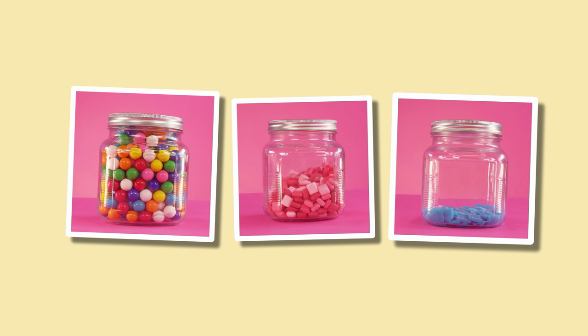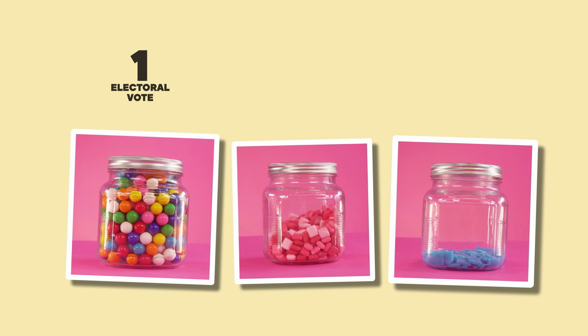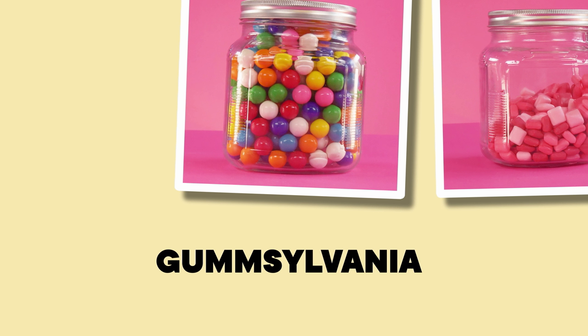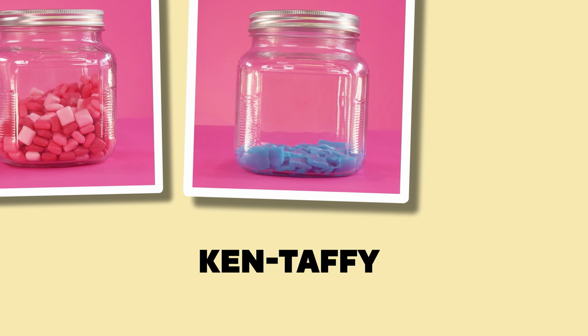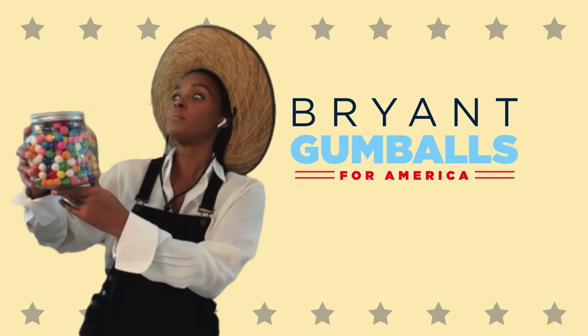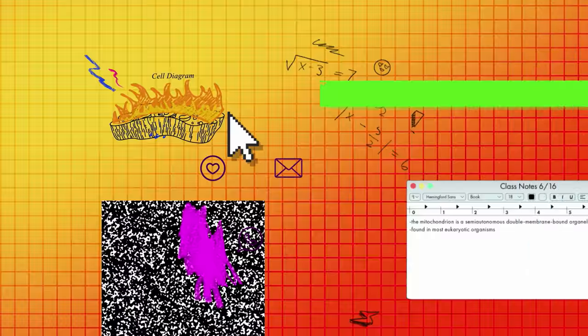How is that possible? I'm going to show you by running for president of my kitchen. The voters I'm going to try and win over are the candy in these jars — we have gumballs, fruit juice, and blue taffy. To keep it simple, let's say each jar is its own state, and each has one single electoral vote. Let's call our states Gumsylvania, Frutichusets, and Kintaffy. And the candidates: Bryant Gumballs himself and Donald Taffy — the political matchup of the century. In order for either candidate to win this election, they will need to win two electoral votes, meaning two of the three states.